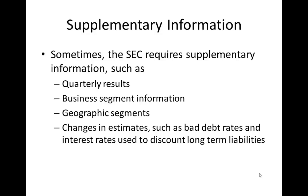The fourth category is Supplementary information. Sometimes the SEC requires supplementary information, such as quarterly results, significant business segments, geographic segments, and changes in estimates — such as bad debt rates and interest rates used to discount long-term liabilities.